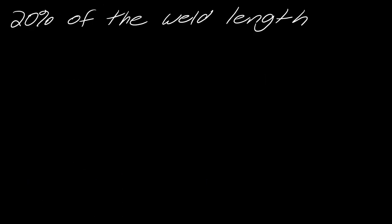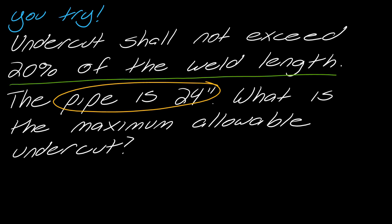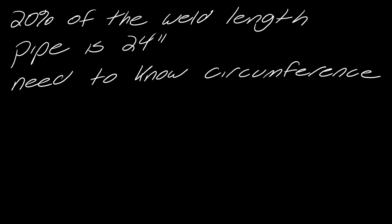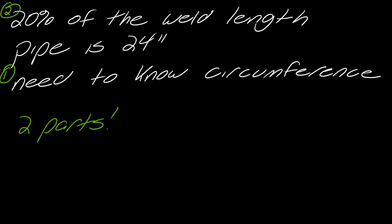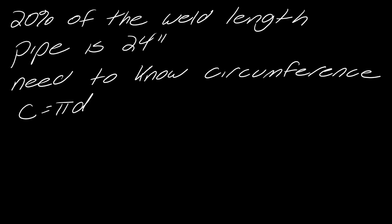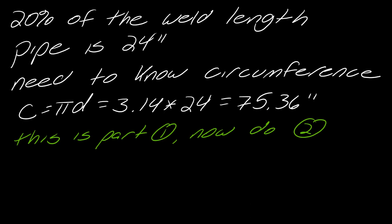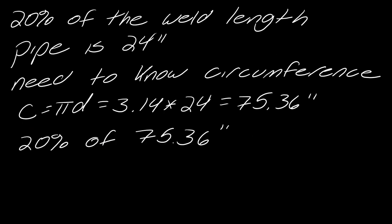We need to find 20% of the weld length. The weld length comes from the 24-inch pipe, so I need the circumference. Two parts: first, find the circumference; second, find 20% of the weld length. Circumference = π × D = 3.14 × 24 = 75.36 inches. Then, 20% of 75.36 inches: 0.20 × 75.36 = 15.072 inches.